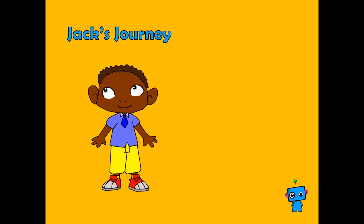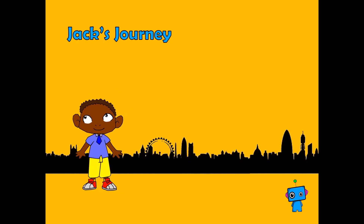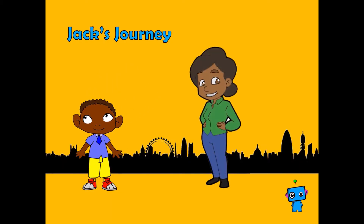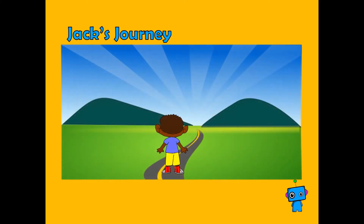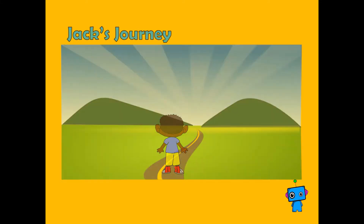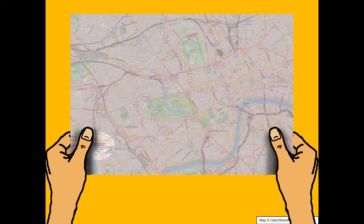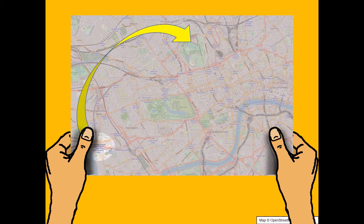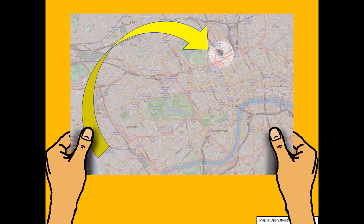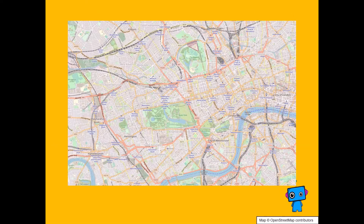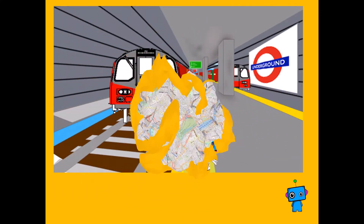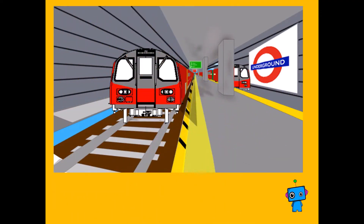We're going to start by looking at Jack's journey. Jack has been to London where he's been visiting his auntie, but now he needs to go home. To do this, he needs to get to the station, so he looks at a map. It's very confusing. He knows he's in Hammersmith and he needs to go to Euston to catch the train home, but all the roads and parks on the map are confusing him. He decides he's going to get an underground train.